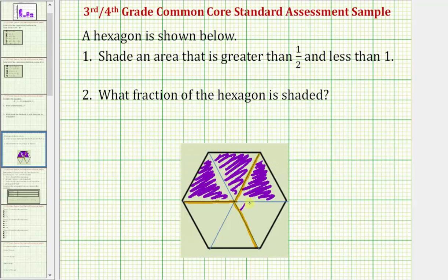So we have three-sixths, and now we have four-sixths. And notice how this fraction is greater than one-half and less than one, so we could stop here. If we take a look at number two, it says what fraction of the hexagon is shaded. So we could say four-sixths of the hexagon is shaded.